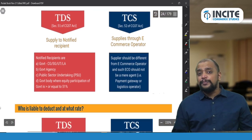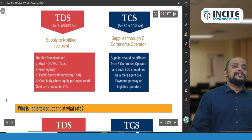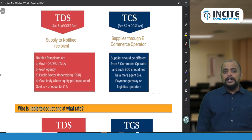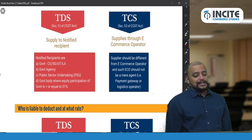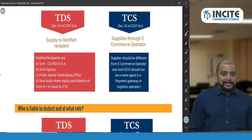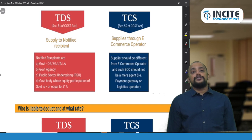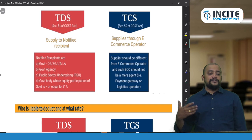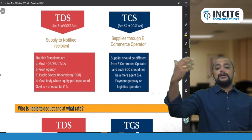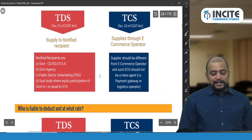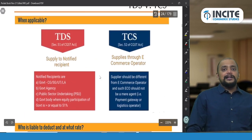The notified recipients for TDS are: Central Government, State Government, local authority, Union Territory, government agency, public sector undertaking, and any government body where the government's investment is greater than or equal to 51%. Whenever you make a supply of goods or services to them, they will deduct TDS at the time of making remittances to the supplier.